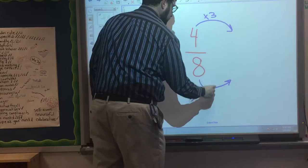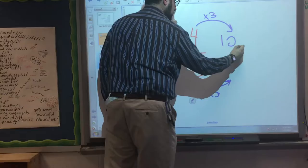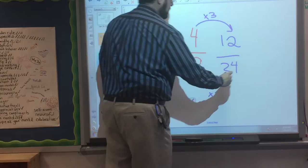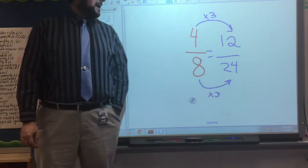I have to use the same number. So I'm going to pick three. Because why not? What's four times three? Twelve. Twelve. And what's eight times three? Twenty-four. Twenty-four. Is twelve twenty-fourths equivalent to four-eighths? Yes. Yeah.